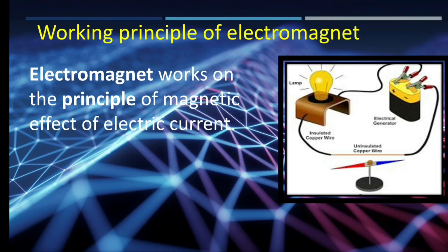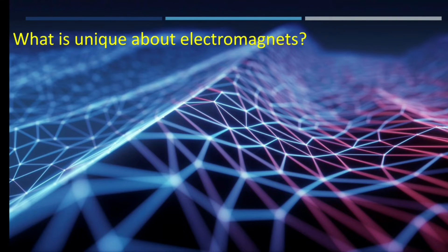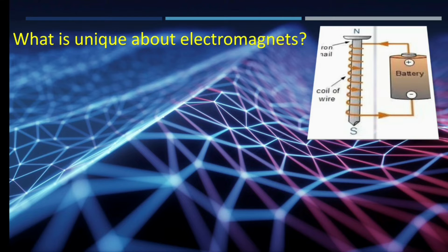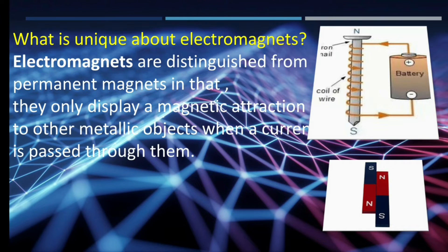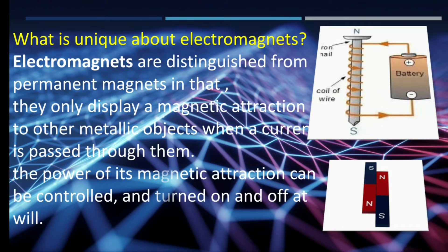If you want to know in detail about the magnetic effect of electric current, a video link will be given in the description. Electromagnets are distinguished from permanent magnets in that they only display magnetic attraction to other metallic objects when a current is passed through them. The power of their magnetic attraction can be controlled and turned on and off at will.